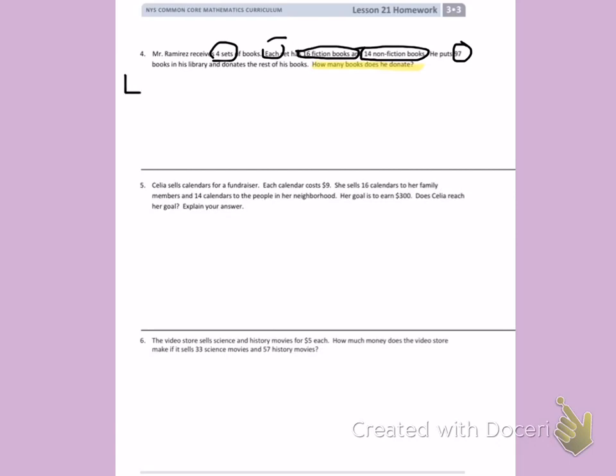I know that he has 14 non-fiction books and 16 fiction books, which will tell me how many books he has. When I look at this problem, I see that I have two parts. They're not equal, though, and that I'm missing the total. When I have two unequal parts, but I'm missing the total, I'm going to add.